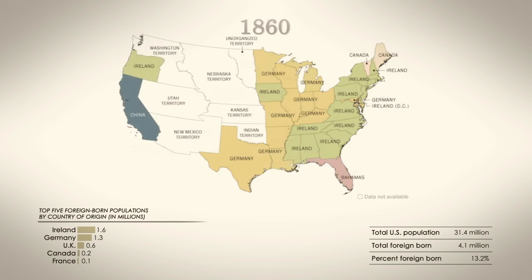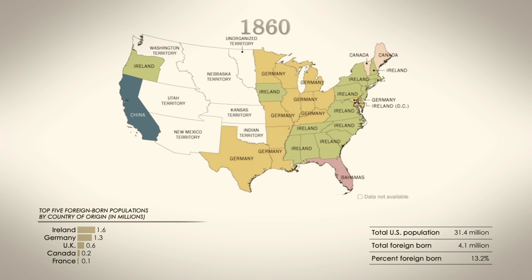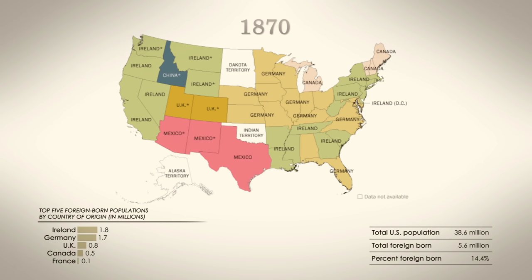In the 1860s, the labor shortages during the Civil War created strong demand for immigrant labor. 1870 saw Mexico become the top country of origin in much of the southwest, while British immigrants preferred the Rocky Mountain territories.